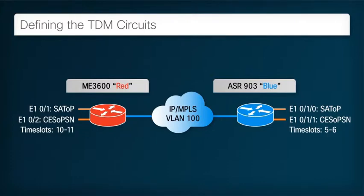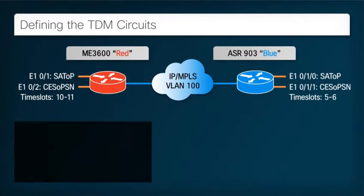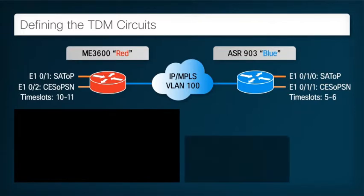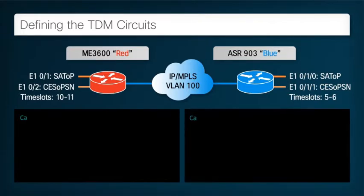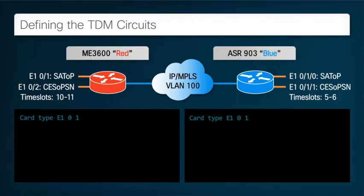First, since this is an ITU-based network, we configure the TDM controllers to be E1 using a card type command. If your network is ANSI-based, there is an equivalent command to configure the TDM interfaces as T1.